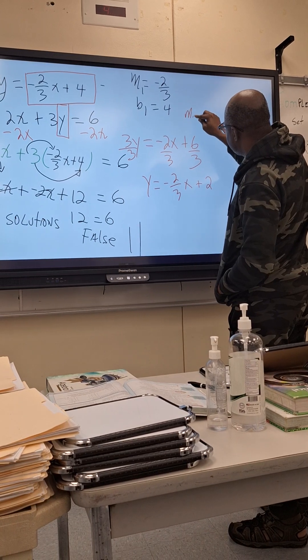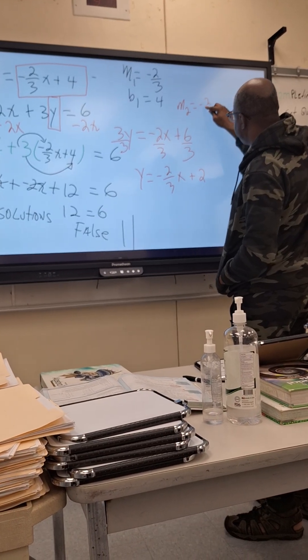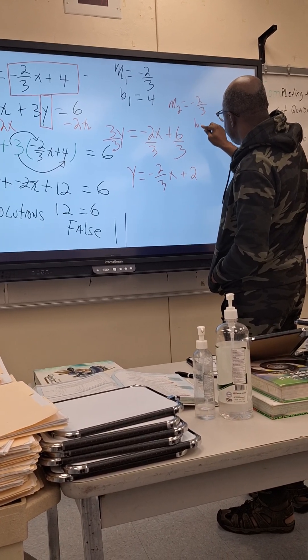Then what would be my slope? Negative 2/3. What would be my b? 2.